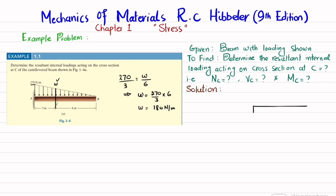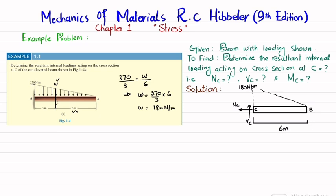Now we will draw the free body diagram of beam portion CB. This is point C, and point B, where you have a distributed triangular load. The magnitude is 180 Newton per meter, and the total length of portion CB is 6 meters. When you cut it, you will have a normal reaction force Nc, a shear force in the upward direction Vc, and a counterclockwise reaction moment Mc. We are going to find these internal loadings.